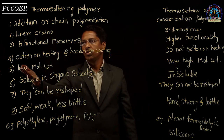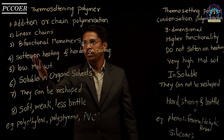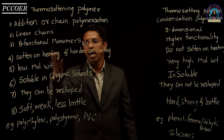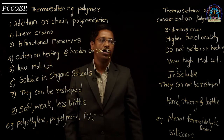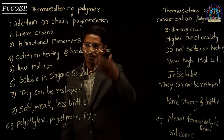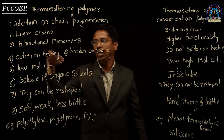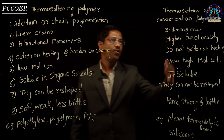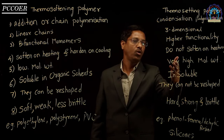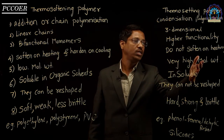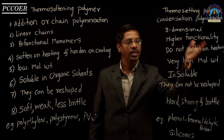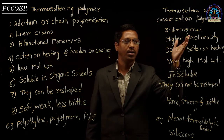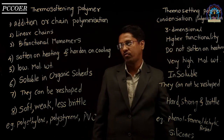Fourth difference: the thermosoftening polymer becomes soft on heating and hard on cooling, and this process can be repeated again and again. While the thermosetting polymer does not become soft on heating — if heated excessively, it may burn or become a char — but it does not become soft.